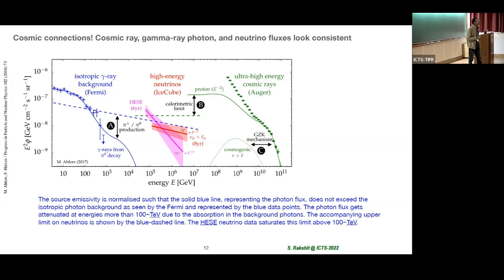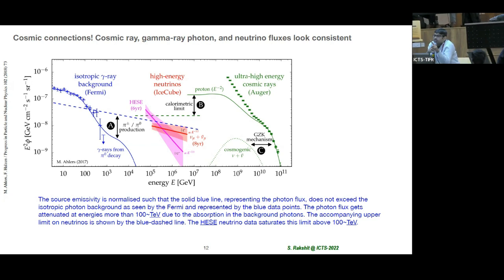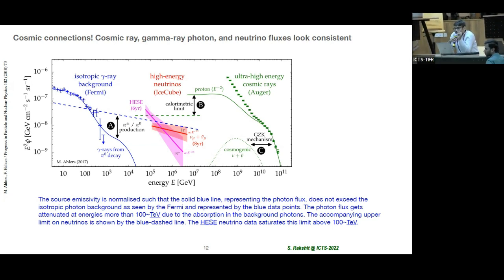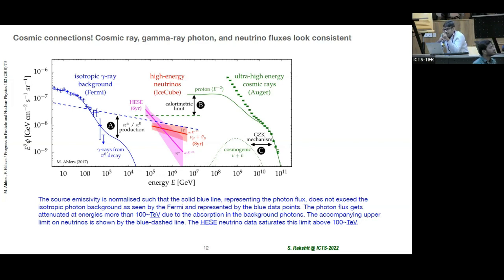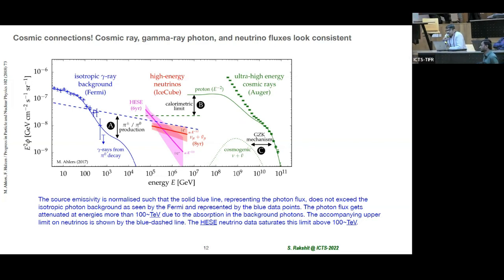Following up on that question — the most important thing would be to get the chemical composition at ultra-high energies, which is very difficult. There is a big debate between the Auger experiment and the Telescope Array experiment because they see slightly different things: one sees a more proton-rich composition and the other iron-rich. Unless that is settled, we cannot make better estimates. Right now it's a conservative estimate.